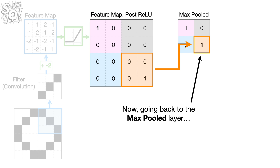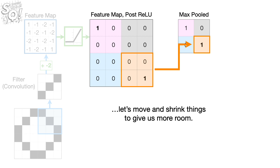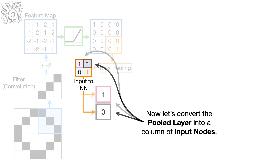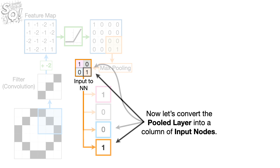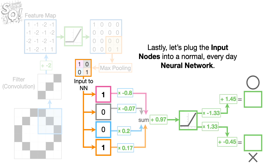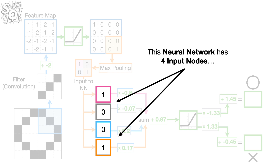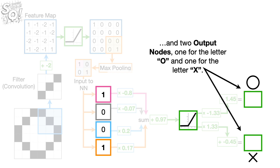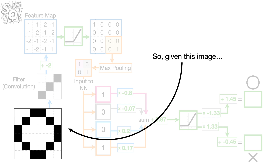Going back to the max pooled layer, let's move and shrink things to give us more room. Now let's convert the pooled layer into a column of input nodes. Lastly, let's plug the input nodes into a normal, everyday neural network. This neural network has four input nodes, a single hidden layer with a single node using the ReLU activation function, and two output nodes — one for the letter O and one for the letter X.